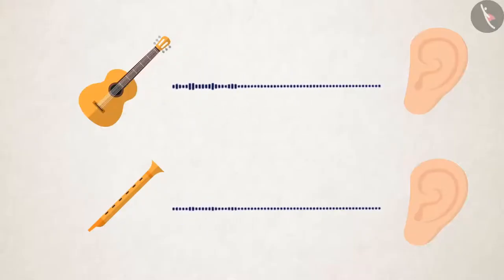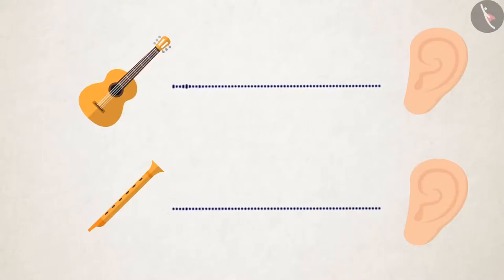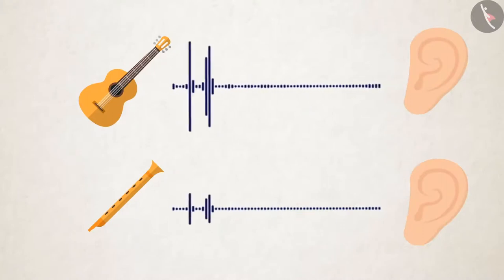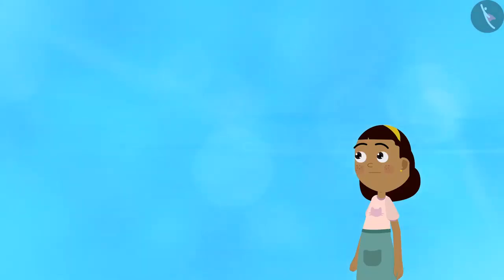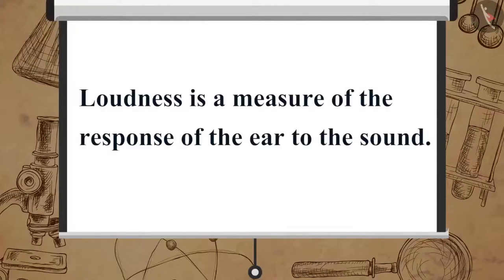When we come across two sounds of the same intensity at the same time, we might find one sound louder than the other. It is simply because our ear detects one sound better than the other. Therefore, loudness is a measure of the response of the ear to the sound.